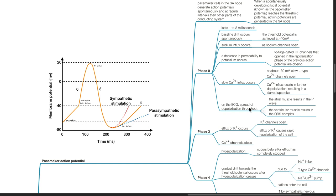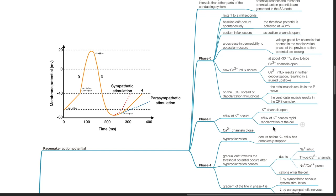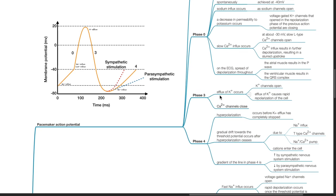On the ECG, spread of depolarization throughout the atrial muscle results in the P-wave, and the ventricular muscle results in the QRS complex. In Phase 3, efflux of potassium occurs as potassium channels open, causing rapid repolarization of the cell, and calcium channels close.